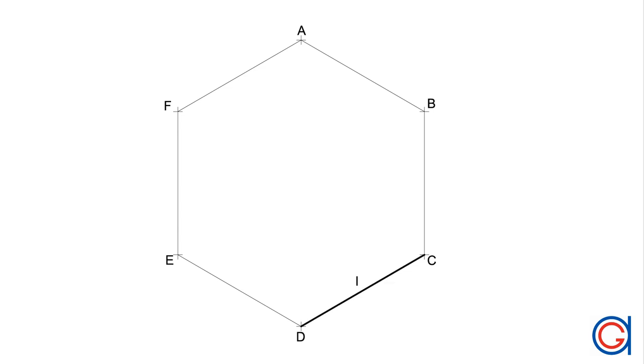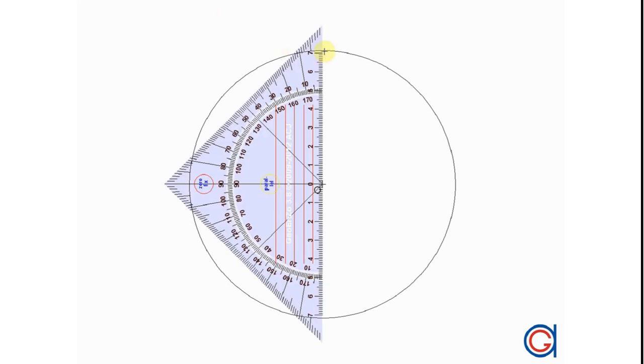The first step is we're going to draw a regular hexagon inscribed in a given circumference. We'll start by drawing the vertical diameter, which cuts the circumference at two points, A and D.